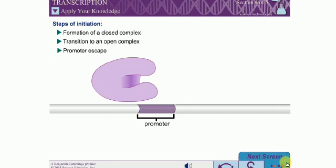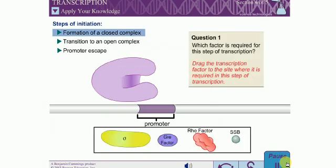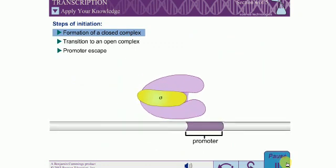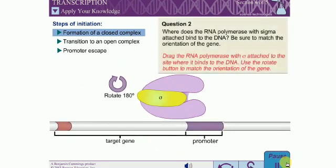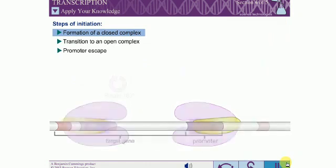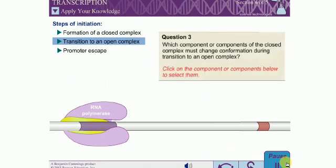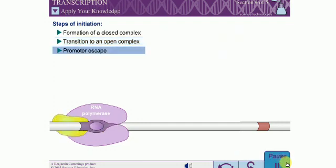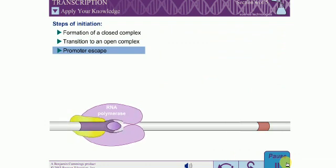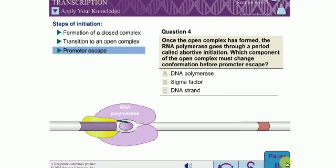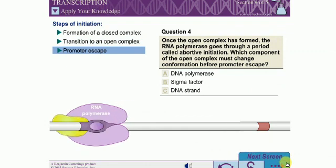Initiation: Help this bacterial RNA polymerase find the DNA and begin transcription. Question 1: Which factor is required for this step of transcription? Question 2: Where does the RNA polymerase with sigma attached bind to the DNA? Be sure to match the orientation of the gene. Question 3: Which component or components of the closed complex must change conformation during transition to an open complex? Question 4: Once the open complex has formed, the RNA polymerase goes through a period called abortive initiation. Which component of the open complex must change conformation before promoter escape?